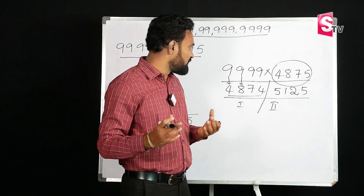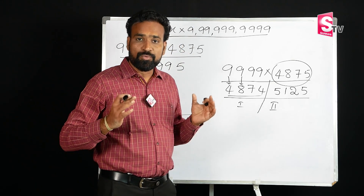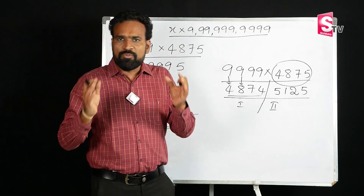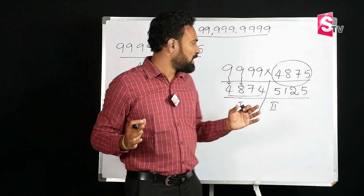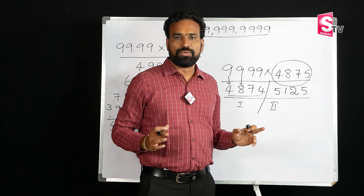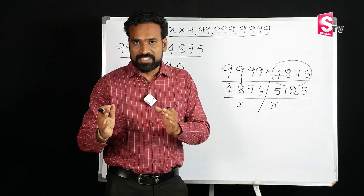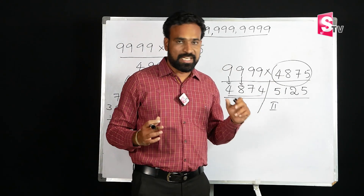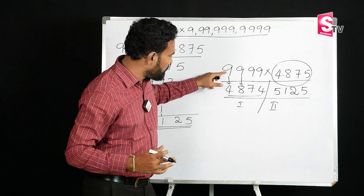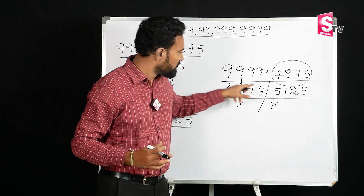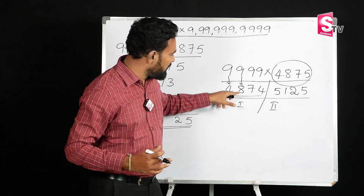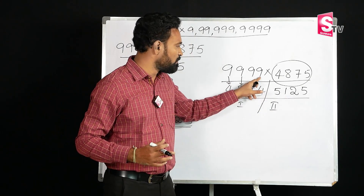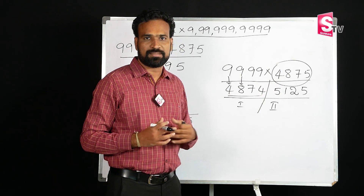Let me explain clearly. This method only applies when the multiplier is all 9s. Here we have 4875, so 1 less than 4875 is 4874 — that is the first part. Then, simple subtraction: 9 minus 4 is 5, 9 minus 8 is 1, 9 minus 7 is 2, 9 minus 4 is 5. That is the final answer.